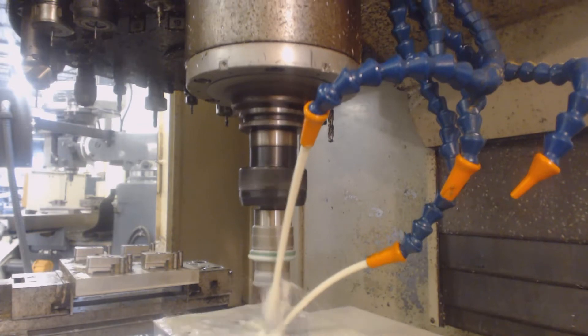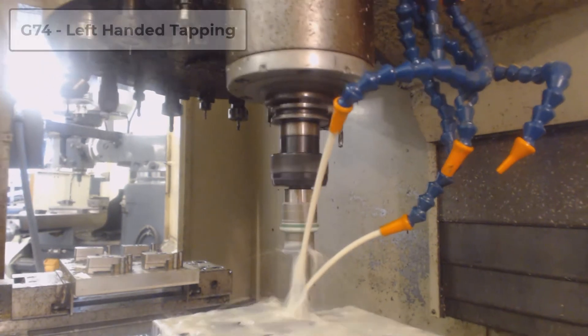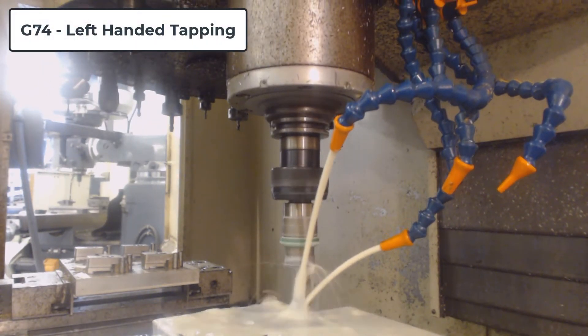This pattern will be repeated for every X and Y-location programmed between the G84 line and the G80. When a left-handed thread is required, a G74 is programmed.